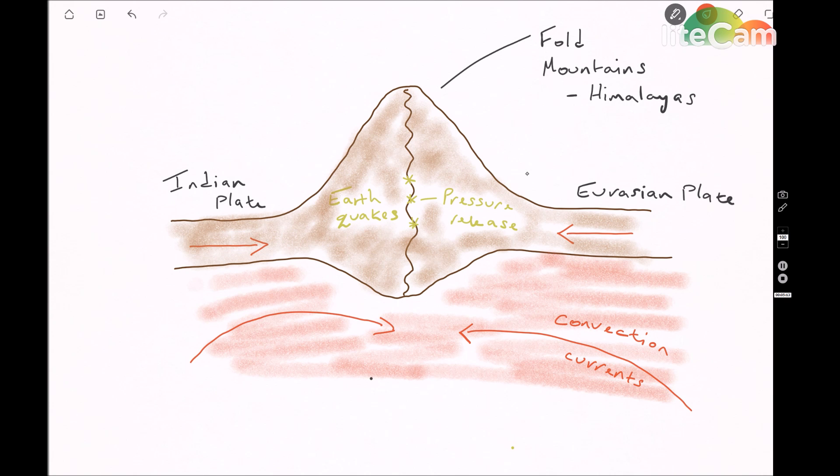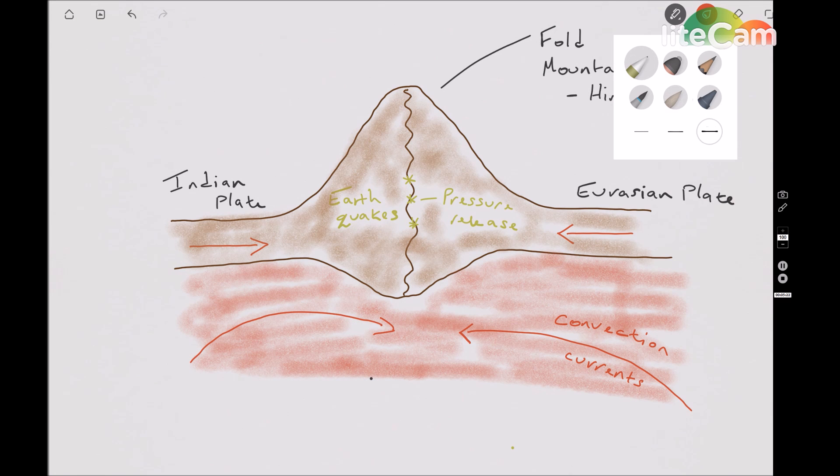if you use the Indian plate and the Eurasian plate, you're likely to get the Himalayan mountains, which is the prime example of fold mountains in the world.